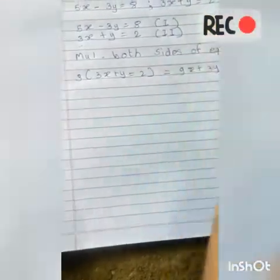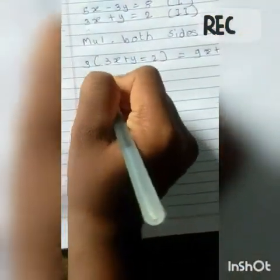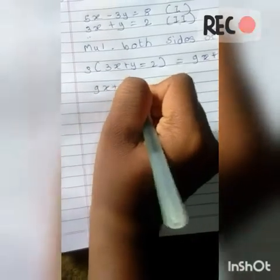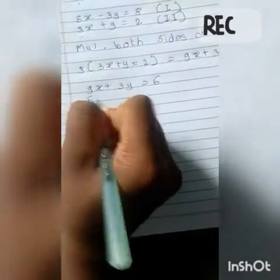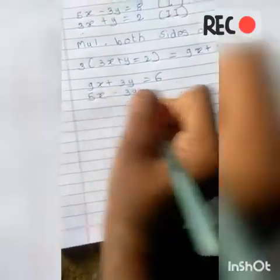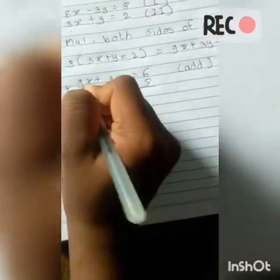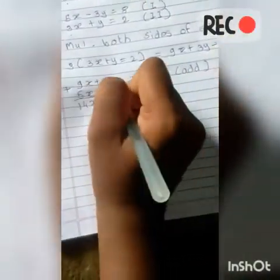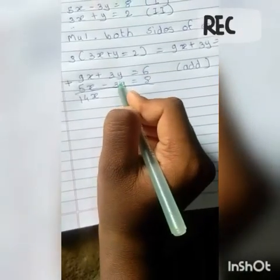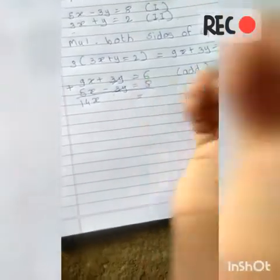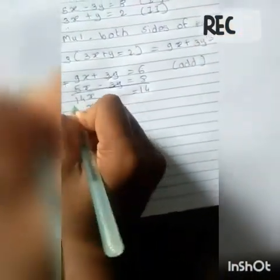Now we add equation 1 and the multiplied equation 2. Adding 9x + 3y = 6 and 5x − 3y = 8: the +3y and −3y cancel out, and 9x + 5x = 14x, and 8 + 6 = 14. So we get 14x = 14.